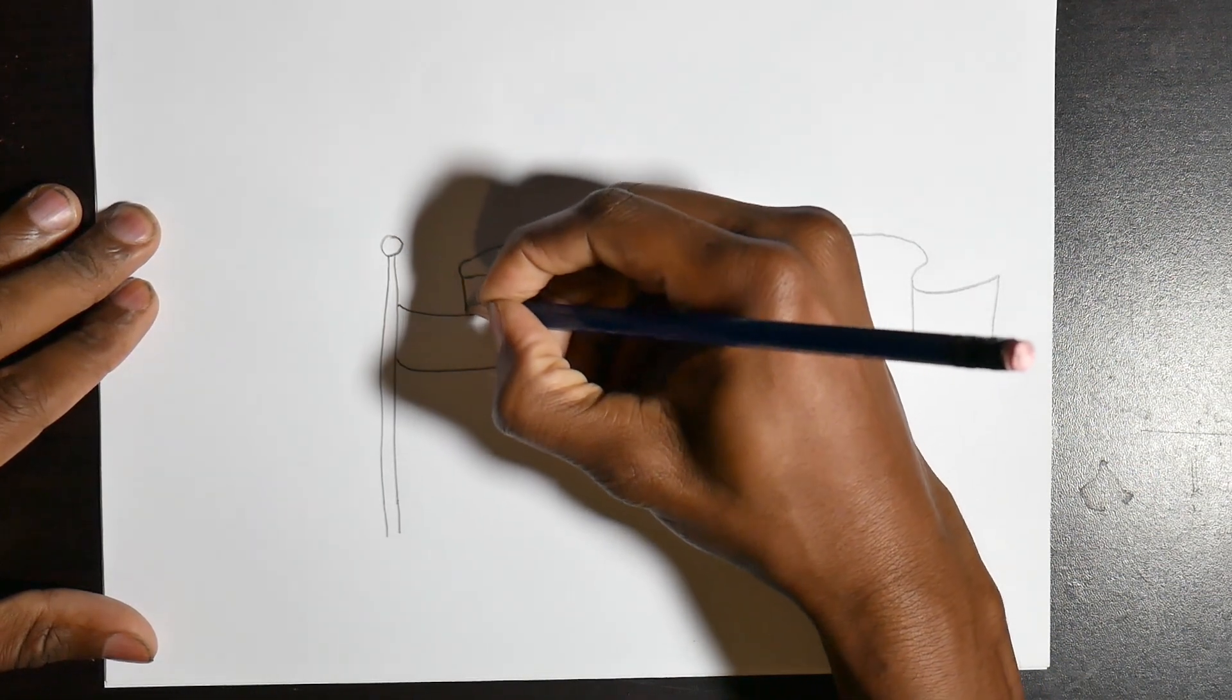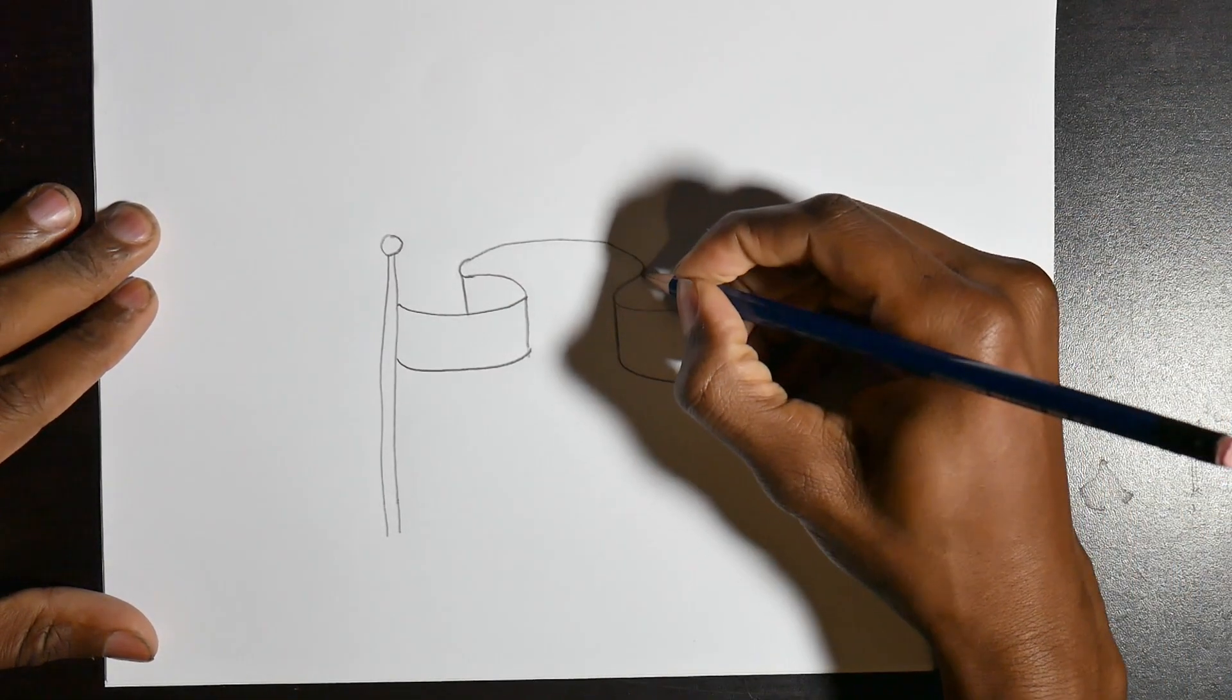Then let's add in the back thickness lines as well. These give the flag a little bit more depth.